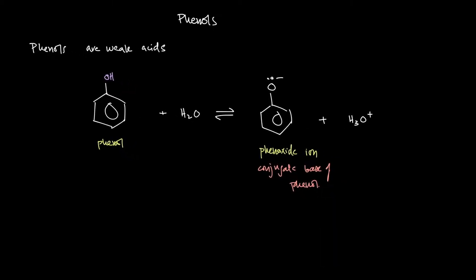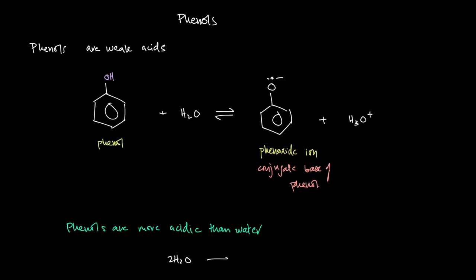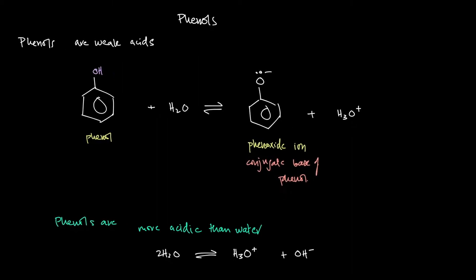The reason why phenols behave as weak acids is that phenols are better acids than water — stronger acids than water. If you look at water's ionization, you have H2O forming H3O plus and OH minus. The conjugate base of water is hydroxide, and the conjugate base of phenol is the phenoxide ion.